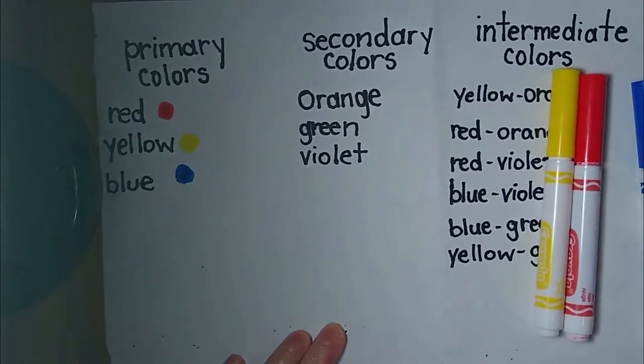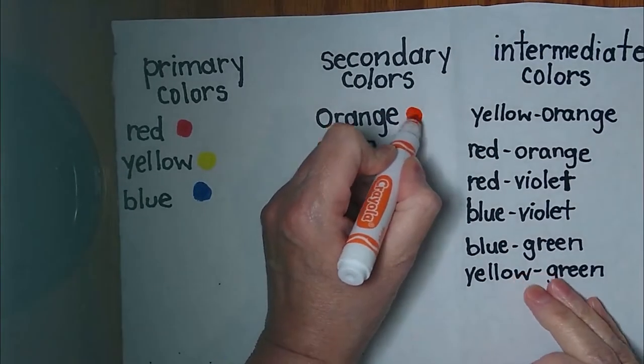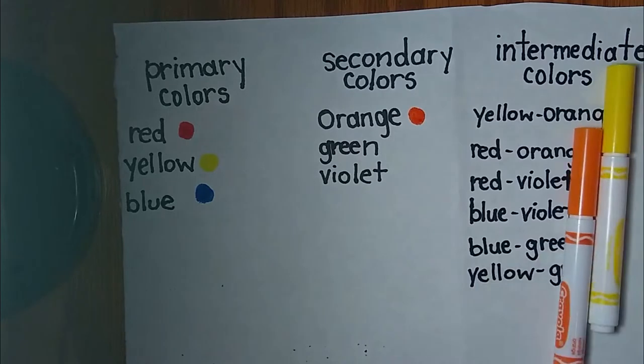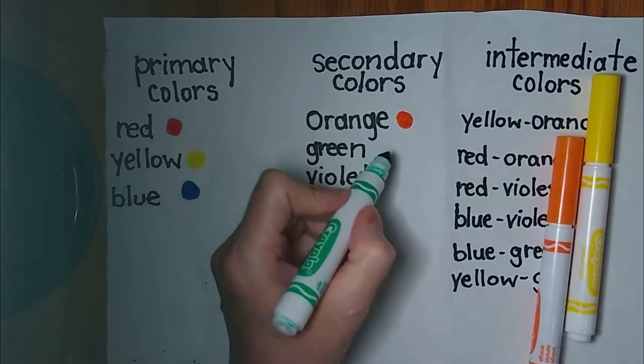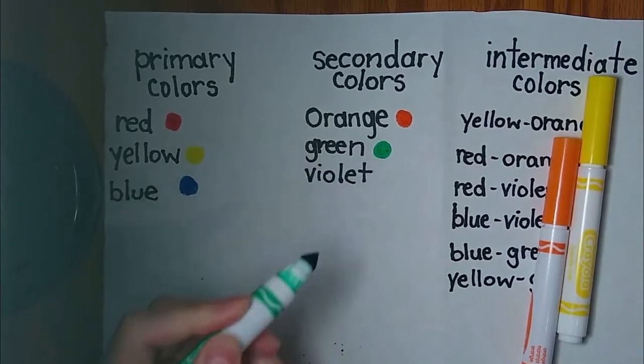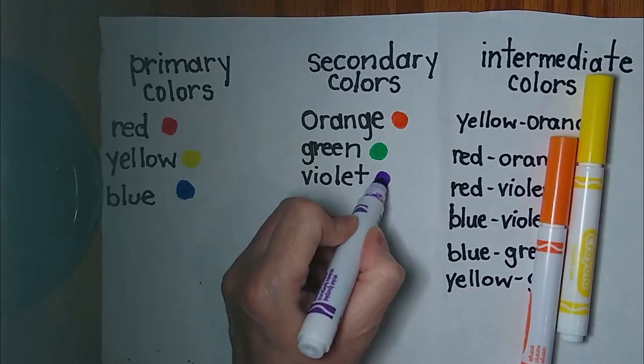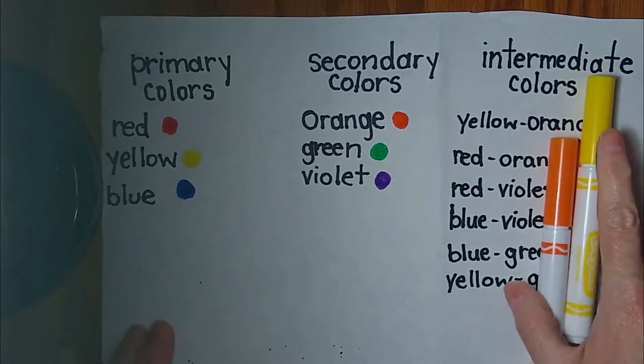Let's put down our secondary colors: orange, green, and violet. And you know violet is the same thing as purple.